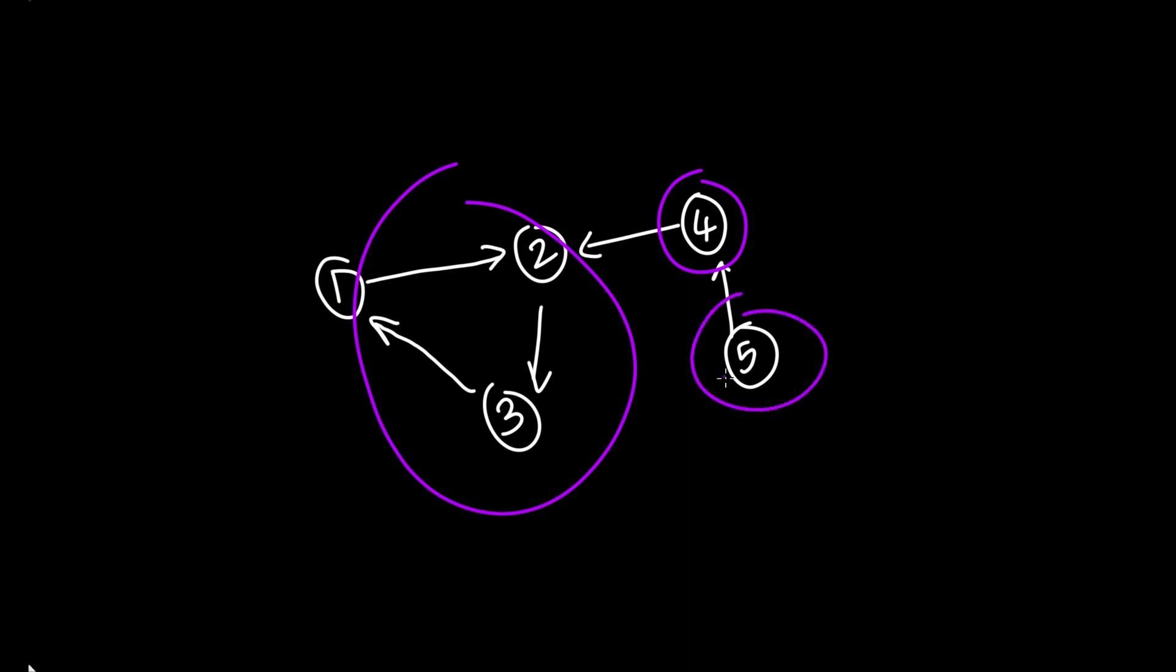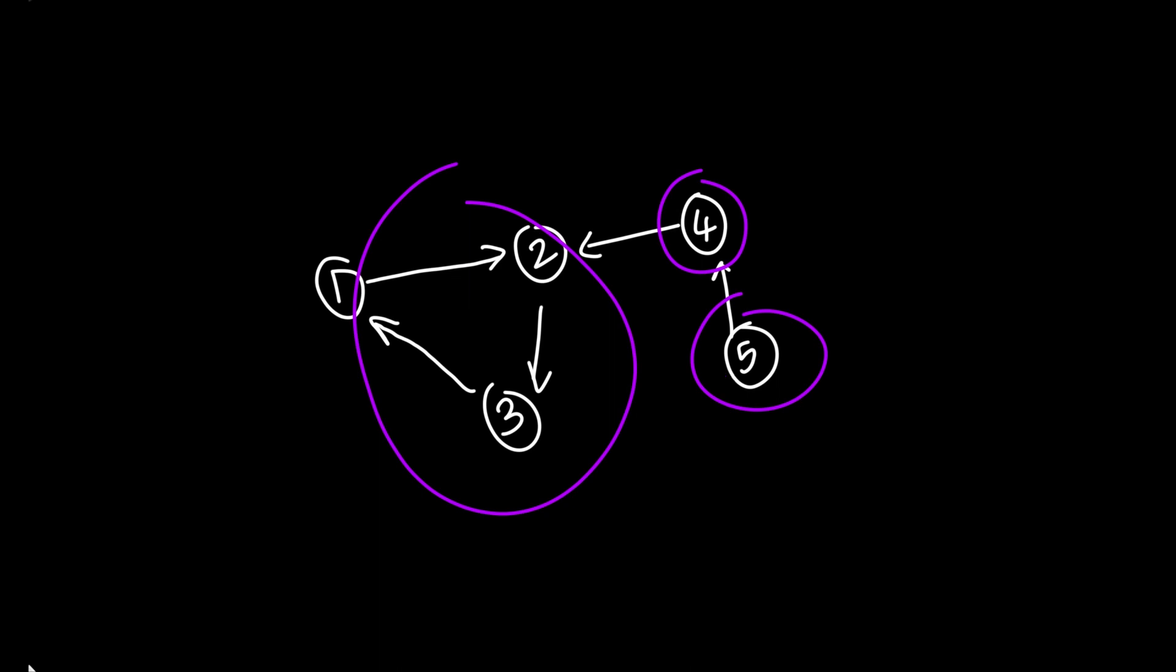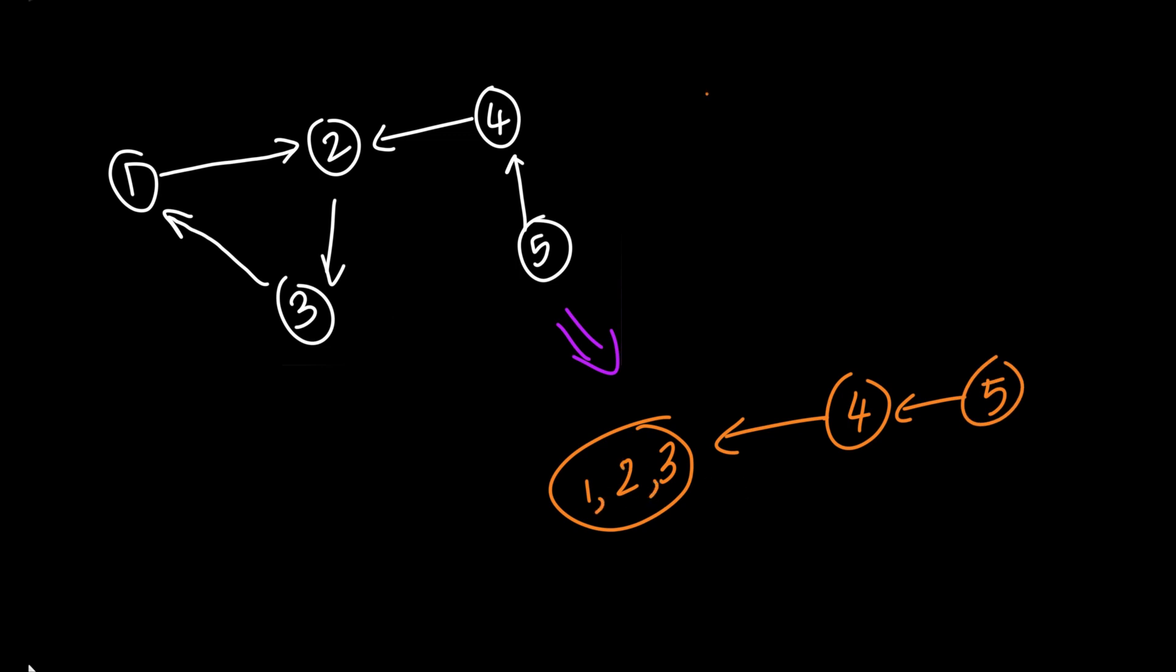I will group all the vertices in a connected component into a single node and leave the connecting edges between these connected components as it is. There is no such edge between these connected components. Otherwise, these two components would be grouped as one connected component because it forms a cycle. Because all of the vertices can be reached using this edge and it forms a connected component.